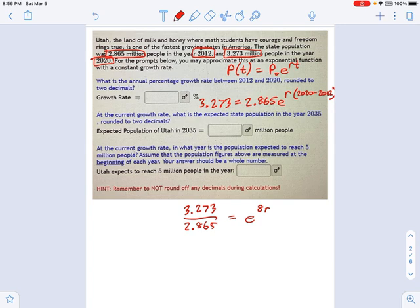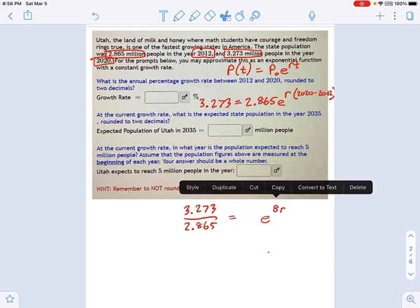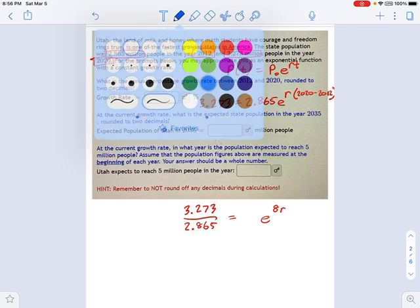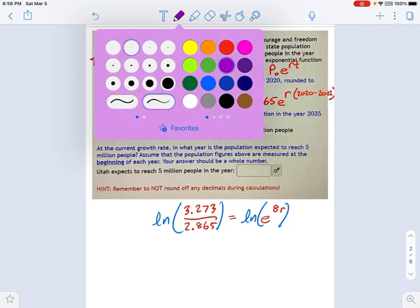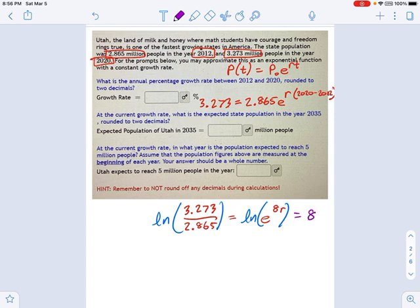And then here, let me do this out down here. We got 3.273 divided by 2.865. And look what that equals. That equals E to the 8R. Remember, 2020 minus 2012 is 8.